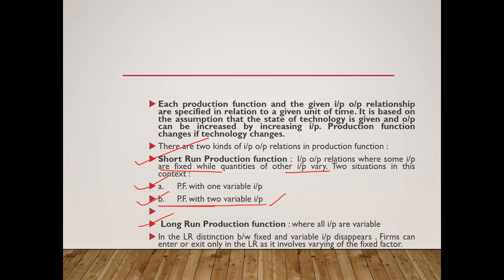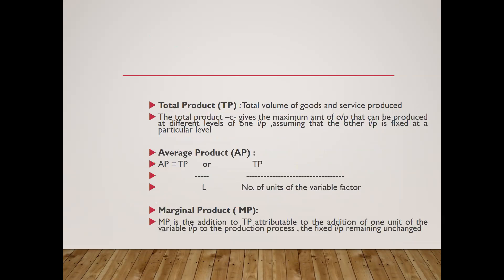Long-run production function means that in the long run, the distinction between fixed and variable inputs disappears — nothing is fixed, all input factors are variable. That would be long-run production function. Before starting this, we would understand total product, average product, and marginal product.